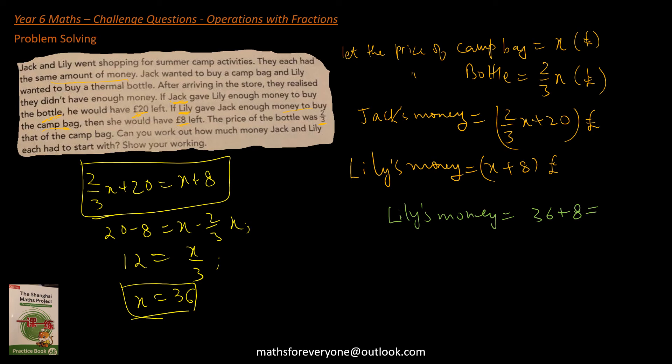So that equals pound 44. And that equals, so I can just say Jack's money is also equal to pound 44 because they have the same amount. So two-third x plus 20, two-third of 36, 12, 24 plus 20 is 44. So hopefully that solves this question.